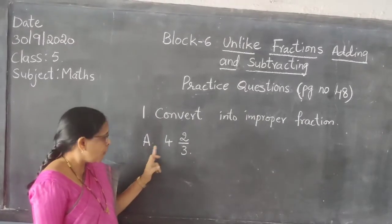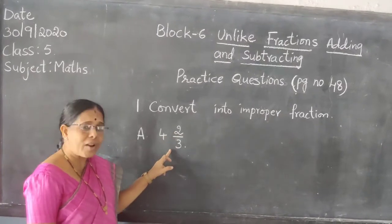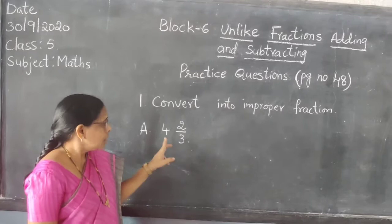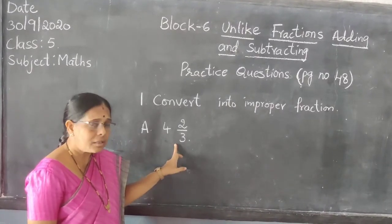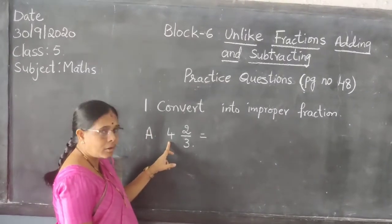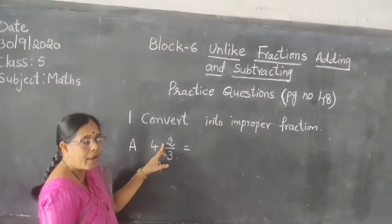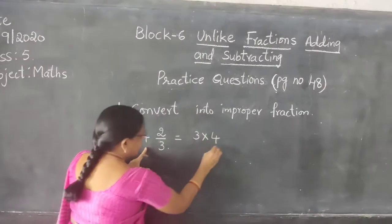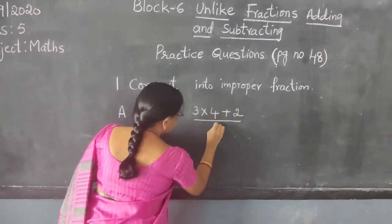So in this, A is 4 and 2/3. This fraction is a mixed fraction. You have to convert it into an improper fraction. How will you convert it, children? For 4 and 2/3: first multiply 3 into 4, then add 2. So: 3 into 4 plus 2, divided by 3.